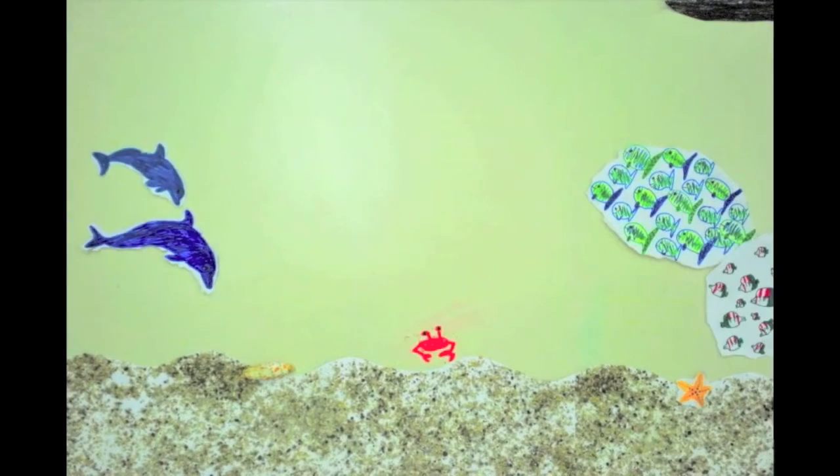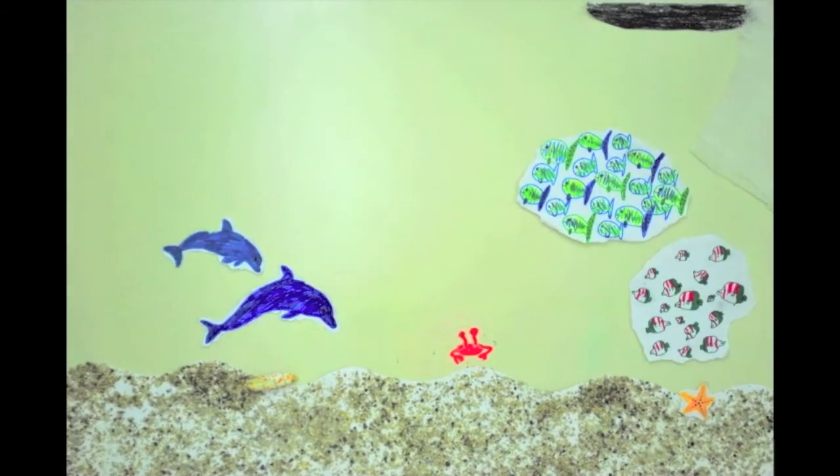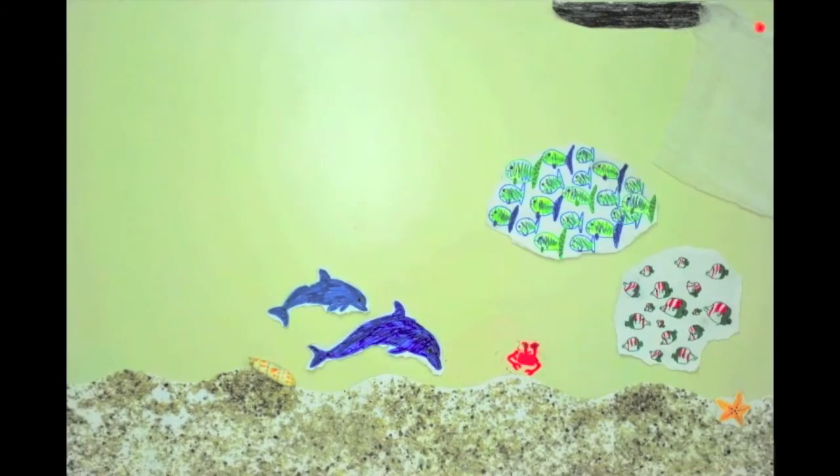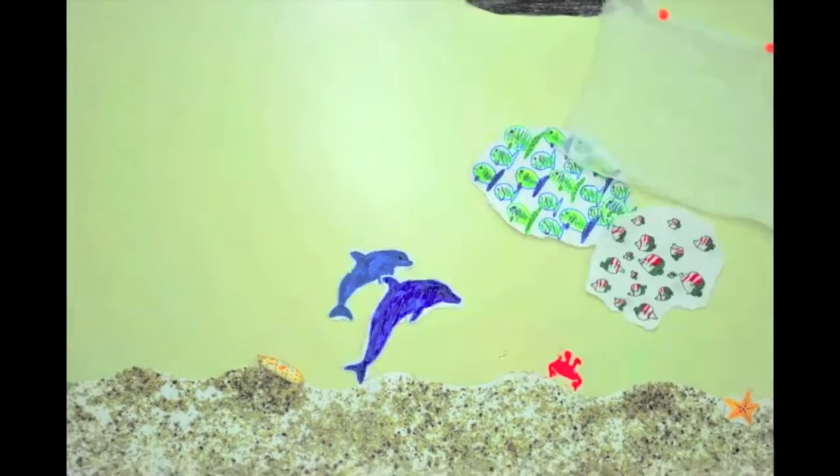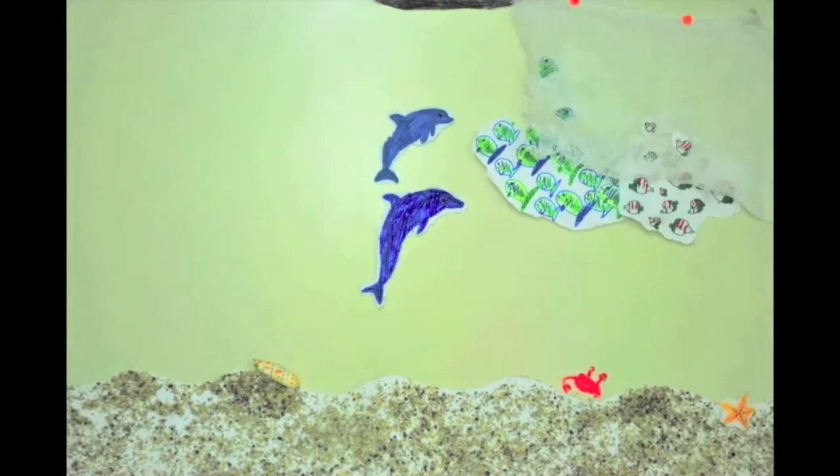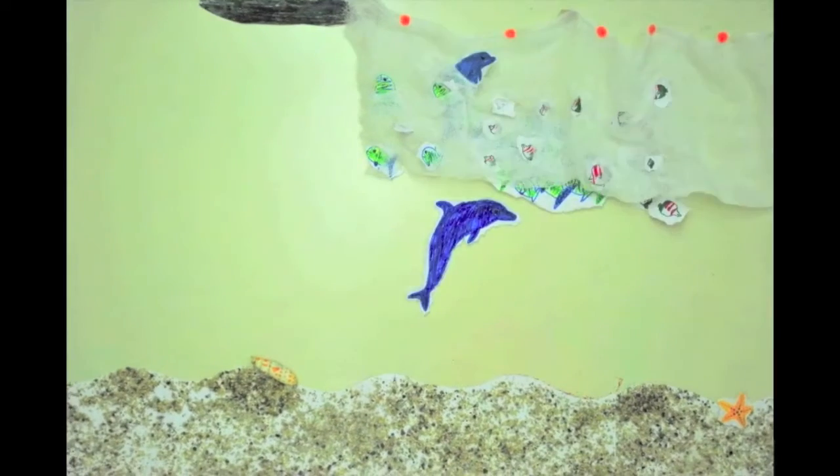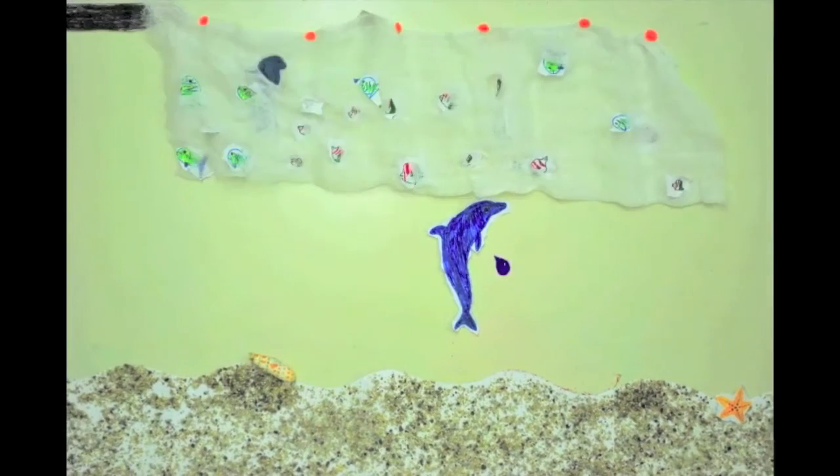In driftnet fishing, expansive nets that serve to snag fish by their gills are allowed to drift freely in the ocean at depths of up to 50 feet and lengths of up to 40 miles. These nets are extremely effective in catching targeted species, but also result in tremendous volumes of bycatch.